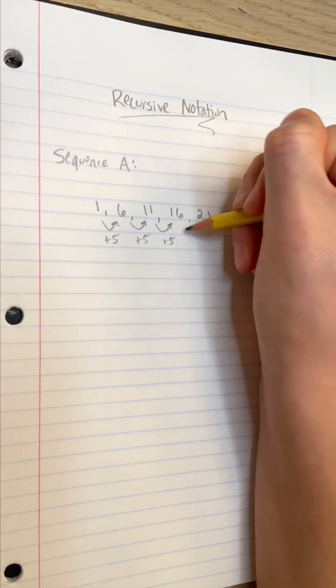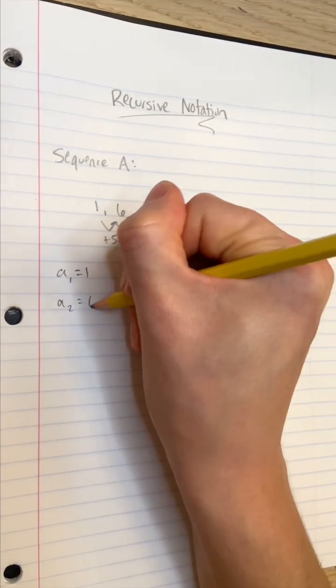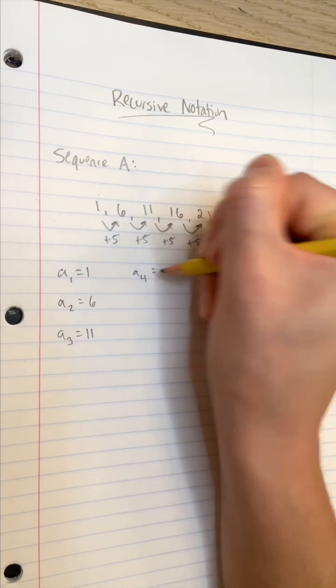Next, let's name each term using subscripts. A sub 1 represents the first term in sequence A, which is 1. A sub 2, the second term, is 6, and so on.